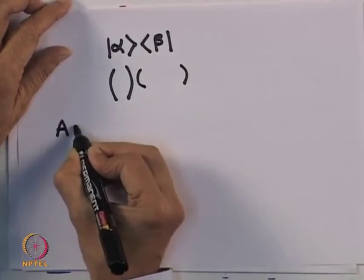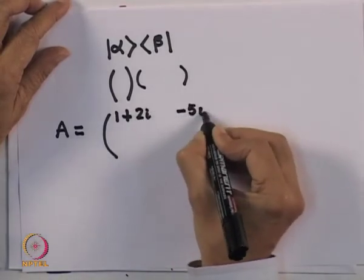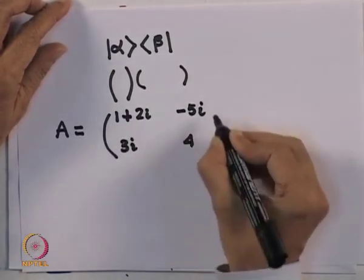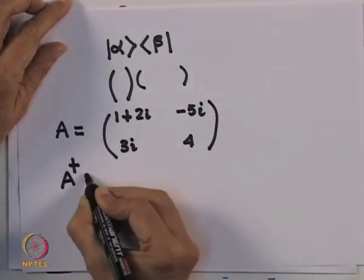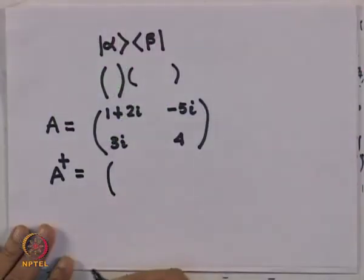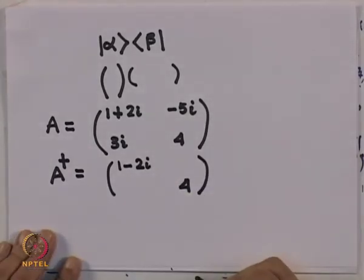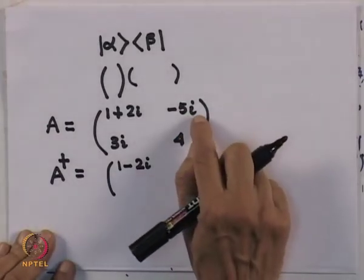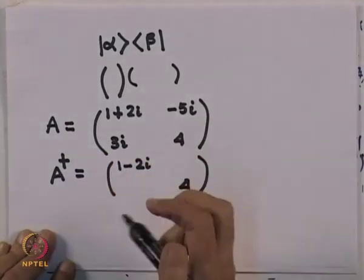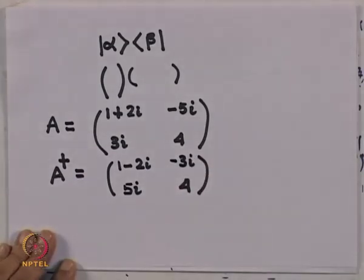Take for example a matrix A with elements: (1+2i, −5i; 3i, 4). To find its adjoint, take the transpose of the matrix — interchanging rows and columns — and then take the complex conjugate of all elements. The (1,1) element 1+2i becomes 1−2i; the diagonal element 4 remains 4. After transposition, −5i moves to the off-diagonal position and its complex conjugate gives 5i; 3i moves and its complex conjugate gives −3i. So this is the adjoint of A, and as you can see, A† ≠ A.